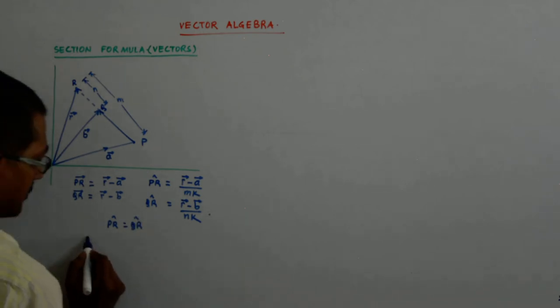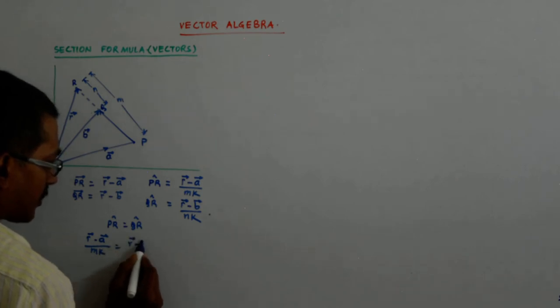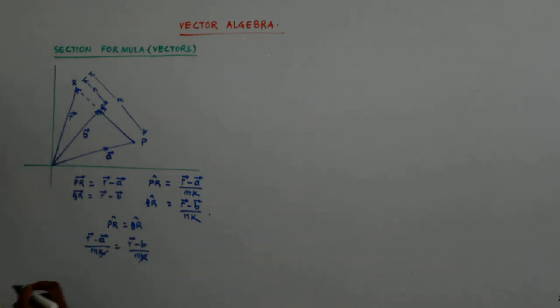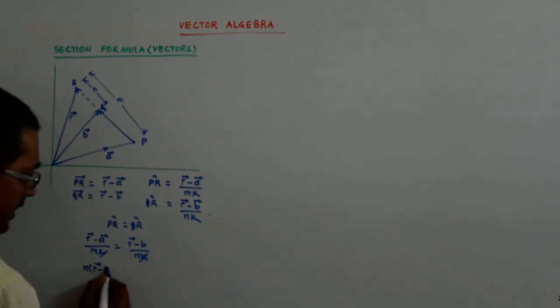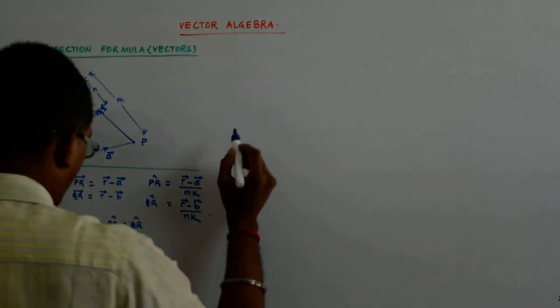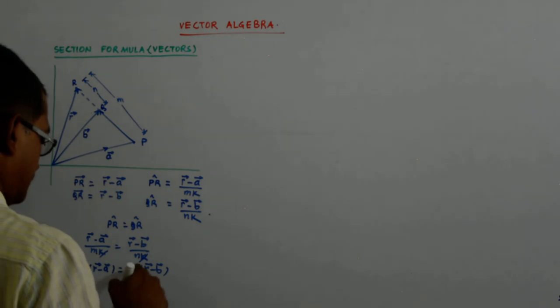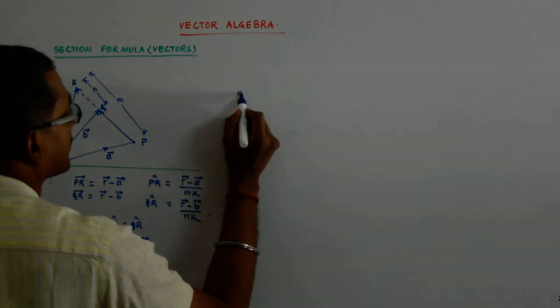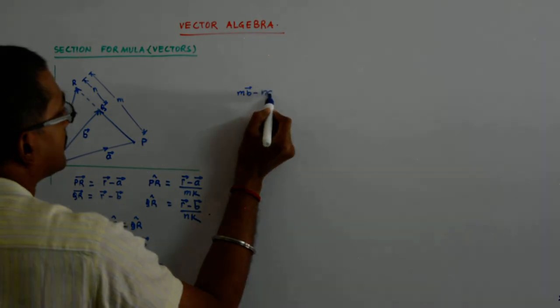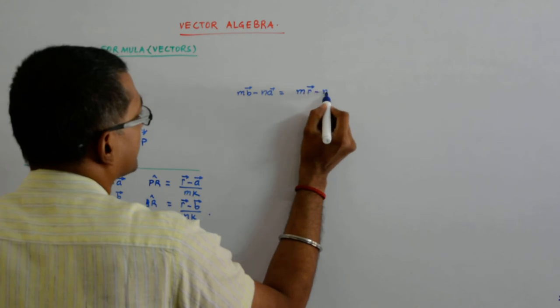So I get R minus A upon MK is equal to R minus B upon NK. K cancels and we get N into R minus A, M into R minus B. That gives me MB minus NA is equal to MR minus NR.